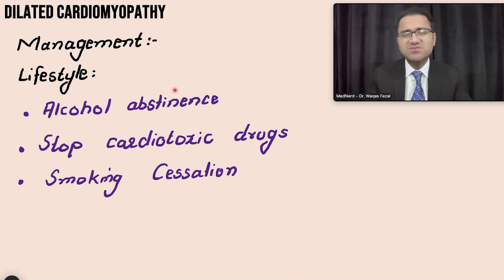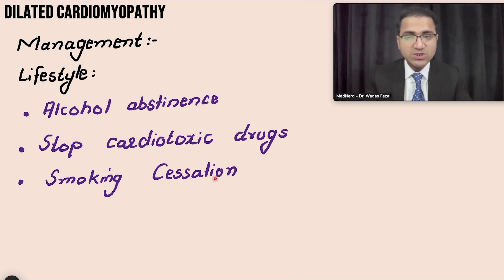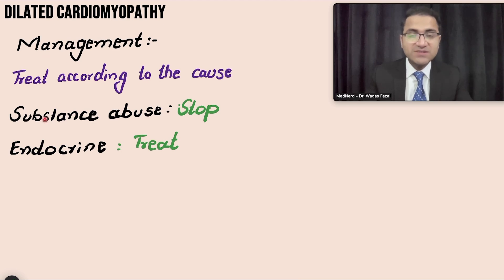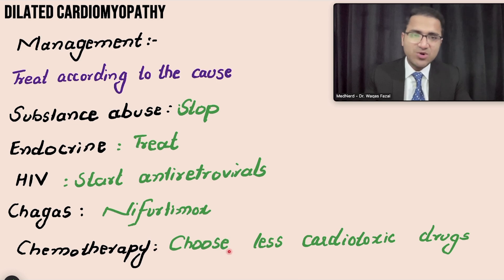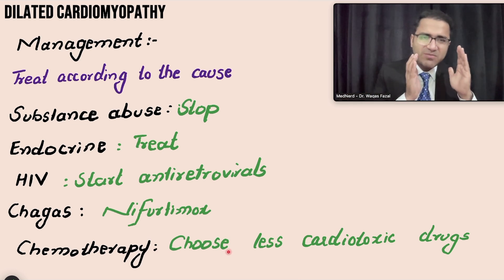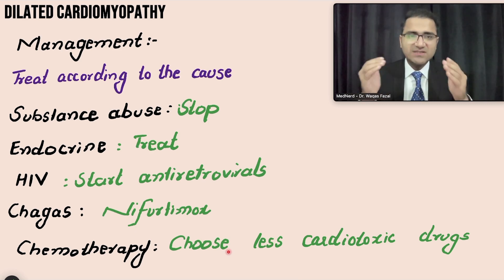Management of dilated cardiomyopathy is essentially management of heart failure plus treating the underlying cause. Tell the patient to stop alcohol, as it is cardiotoxic. If on chemotherapy, switch to less cardiotoxic drugs. Encourage smoking cessation. Treat the specific cause: stop cocaine or amphetamines, treat hyperthyroidism, start antiretrovirals for HIV, use nifurtimox for Chagas disease. If the cause cannot be identified, manage the patient as heart failure.